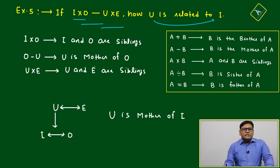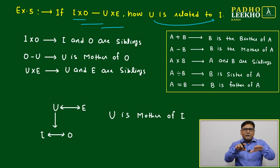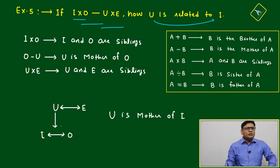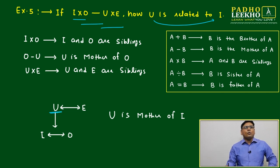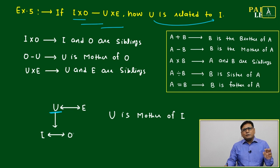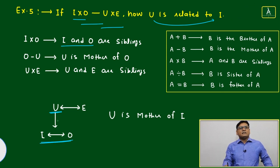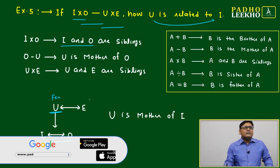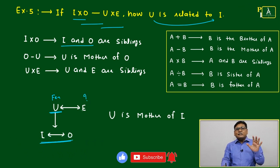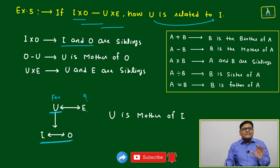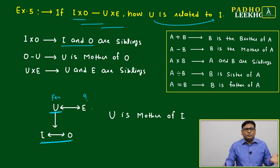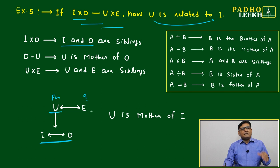O minus U means U is the mother of O. U into E means U and E are siblings. First we look at different generations: U is the mother of O, so U is one generation higher. I and O are siblings, so they are at the same generation. U and E are siblings, but U is feminine — E's gender we don't know. E can be brother of U or sister of U, so the gender of E is not clear.